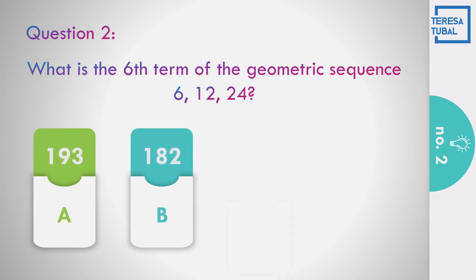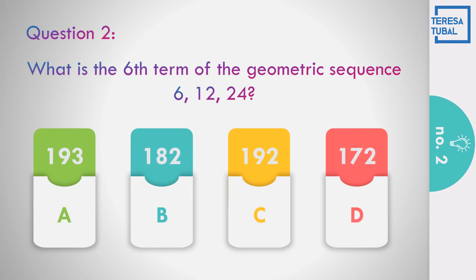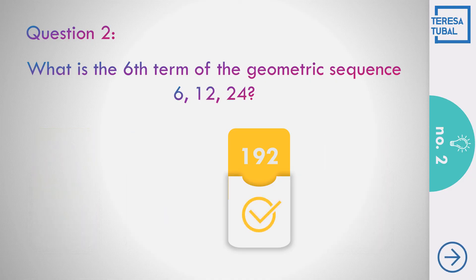How about number 2? What is the sixth term of the geometric sequence 6, 12, and 24? The choices are A) 193; B) 182; C) 192; D) 172. The answer is C, equal to 192.